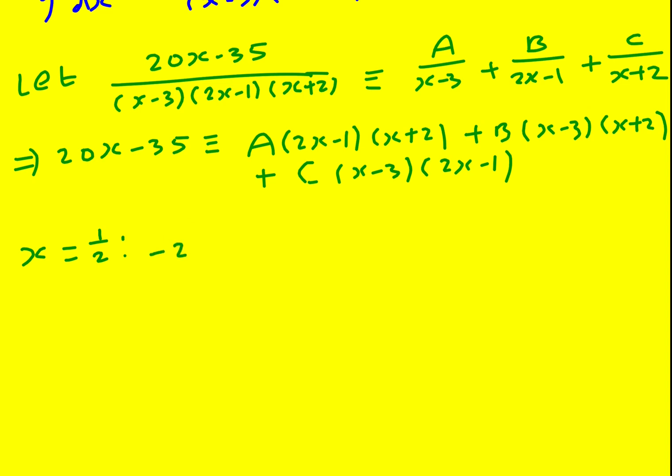So let's start with x is equal to a half. We get 10 minus 35, minus 25, is equal the this term cancels and the c term cancels. So we're just left with b. It's going to be a half minus 3, that's minus 5 over 2. Of course, feel free to use your calculator here. And then a half plus 2 is positive 5 over 2. So this is minus 25 over 4 b. And we can just look at that and see that b is going to have to equal 4 to cancel it. So b is 4.